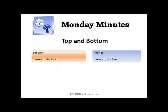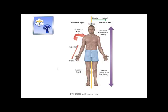Now top and bottom — this is superior for top and inferior for bottom. Superior is when you're talking about something closest to the head of the patient, and inferior is when it's closest to the feet. Looking at the picture here, you can see the purple arrow pointing upward — superior means going up towards the head. For example, the clavicle would be superior, near the head, whereas the knee would be more inferior, away from the head.